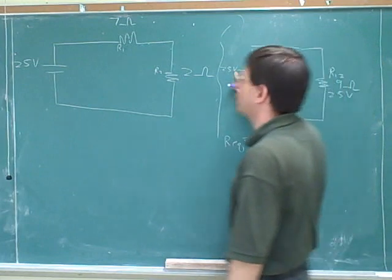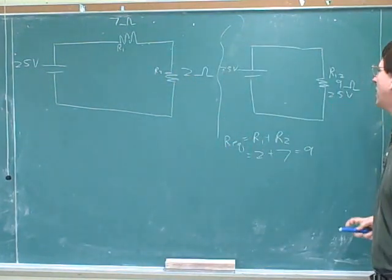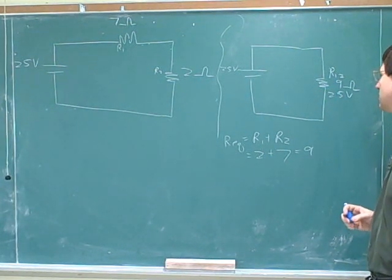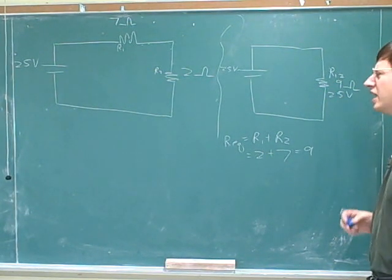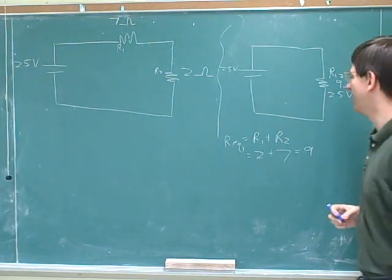Of course we couldn't do that unless we remembered that this was also 25 volts, so you've got to pull over the number of the battery. Excellent. Are there any other numbers we can figure out about this picture? Yeah, we can figure out the current. Yeah, and see we're running out of time, so why don't you use your calculator for that?